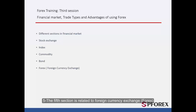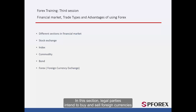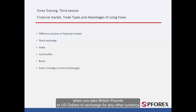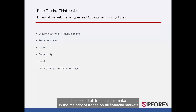The fifth section is related to Foreign Currency Exchange and Forex. This is the largest part of the market. In this section, legal parties intend to buy and sell foreign currencies. For instance, when you take British Pounds or US dollars to exchange for any other currency, you are selling and buying foreign currency. These kind of transactions make up the majority of trades on all financial markets.